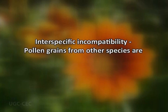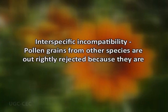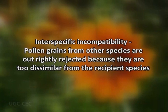In interspecific incompatibility, pollen grains from other species are outrightly rejected because they are too dissimilar from the recipient species. The interspecific incompatibility is polygenic and is controlled by many genes.